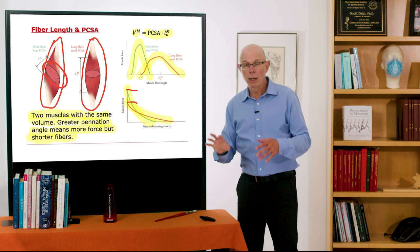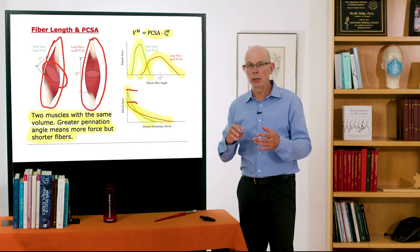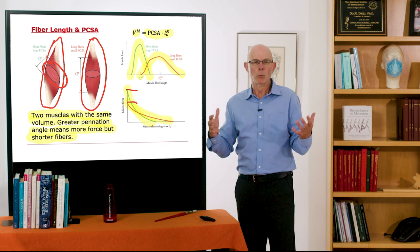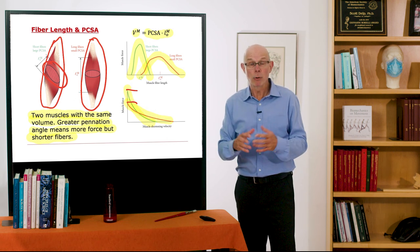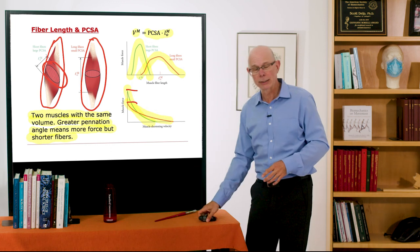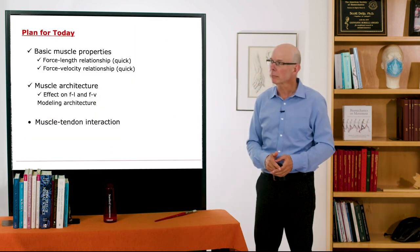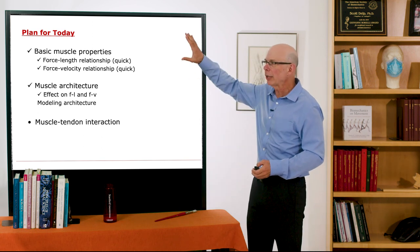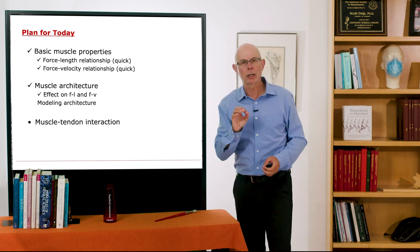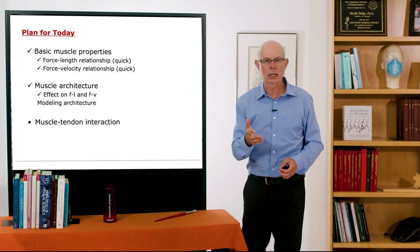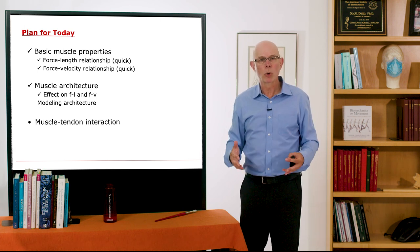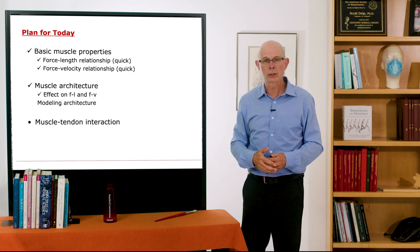So if you were designing muscles and wanted more force over a shorter range of lengths, you'd choose one with a large physiologic cross-sectional area. Our muscles are built with diverse architectures to achieve different functions. We've now covered muscle activation, the basic force-length and force-velocity relationships, and the effect of architecture on those relationships. Next we'll talk about muscle-tendon interaction and how to make engineering computations based on these models.